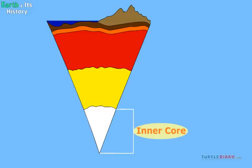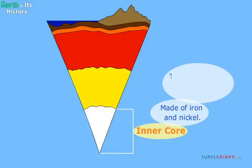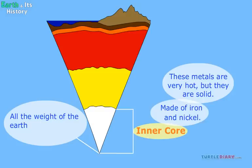The inner core is also made of iron and nickel. These metals are very hot, but they are solid. They are not liquid like the outer core. This is because of all the weight of the Earth pressing down on the center. That keeps it solid. The inner core is 750 miles or 1,200 kilometers thick.